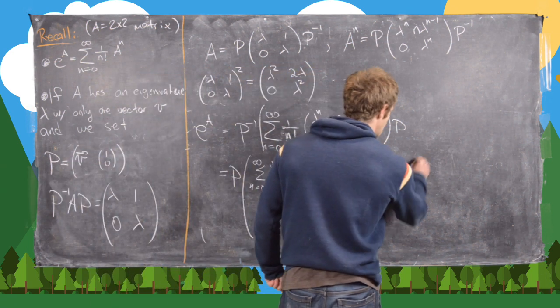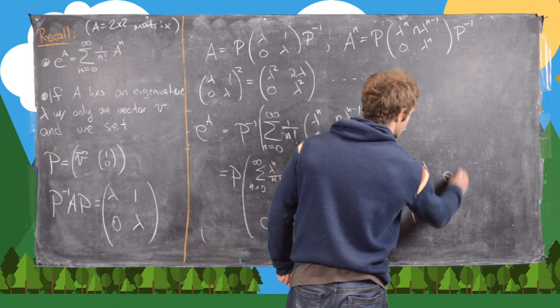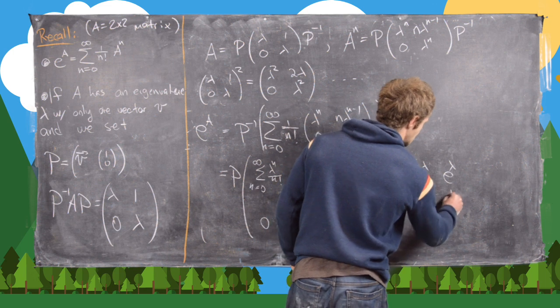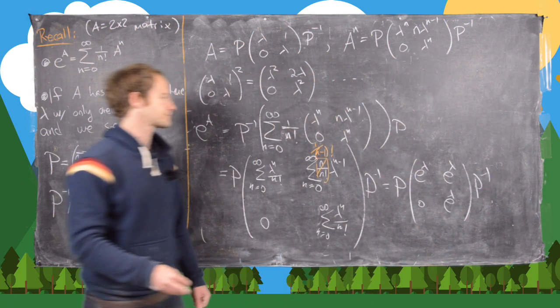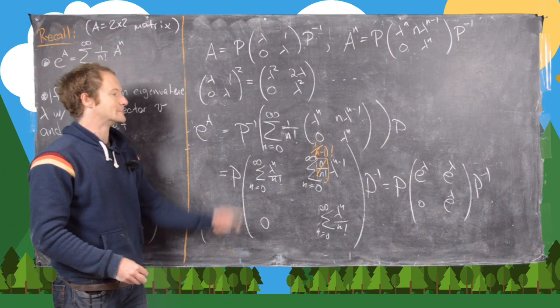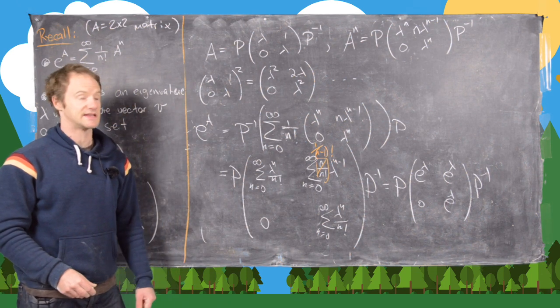So here we get this is P, now we have [e^λ, e^λ; 0, e^λ], and then times P inverse. Okay, good. So now I'll clean up the board and we'll look at an example of this.